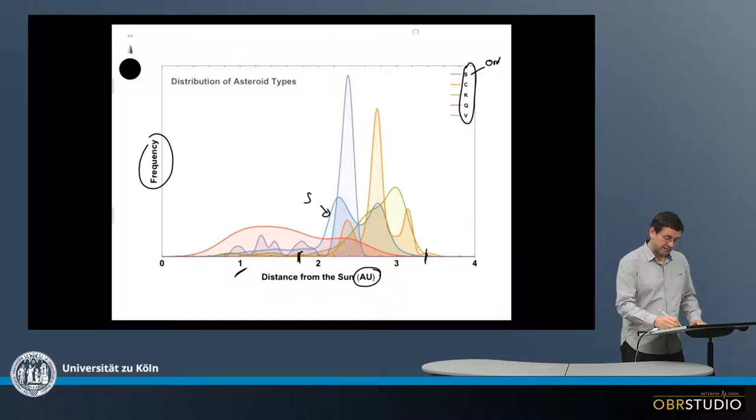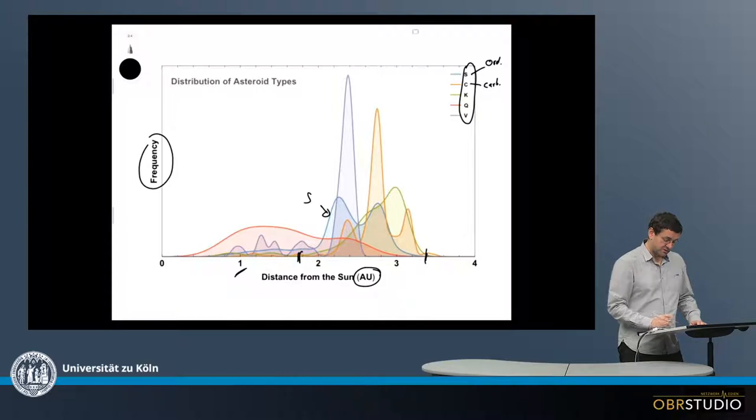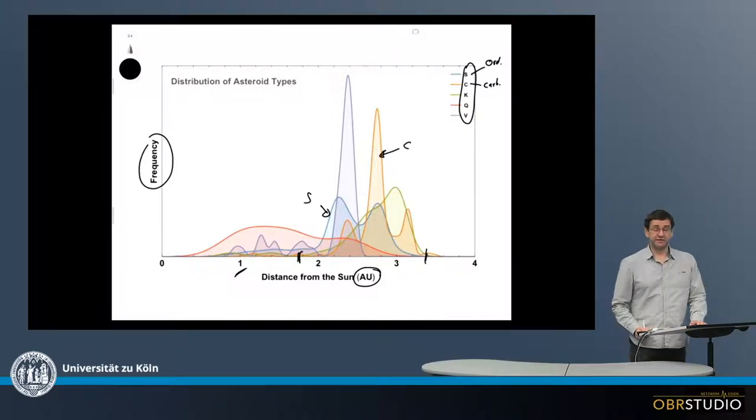The C-type asteroids are often associated with the carbonaceous chondrites. This would be the yellow one here.